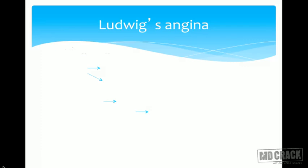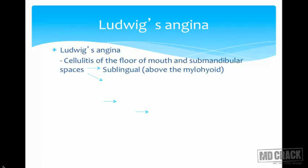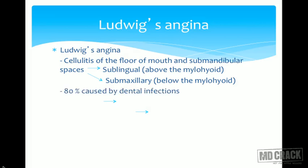Ludwig's angina is the cellulitis of the floor of the mouth and submandibular spaces. The submandibular space is divided into two parts — sublingual and submaxillary — by the mylohyoid muscle. The space above the mylohyoid is the sublingual space; below it is the submandibular space. Both combine to form the submandibular space. 80% of Ludwig's angina cases are caused by dental infections.